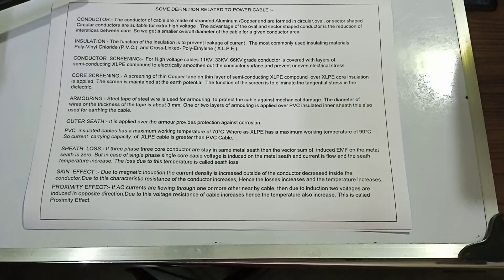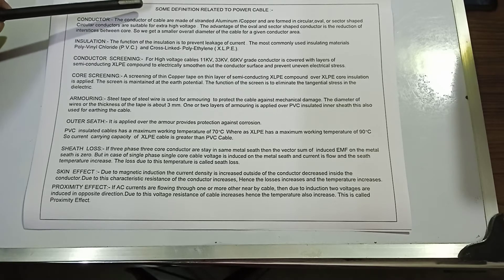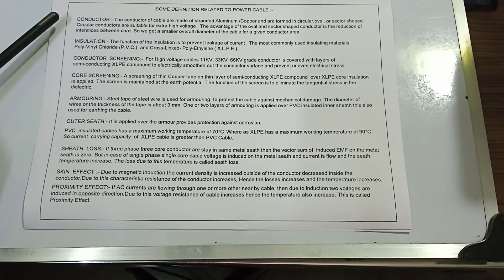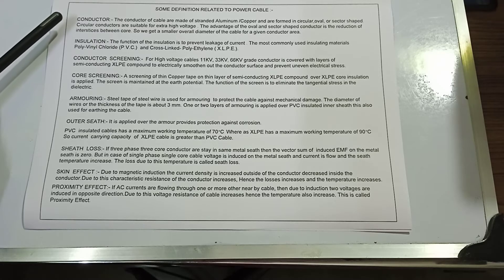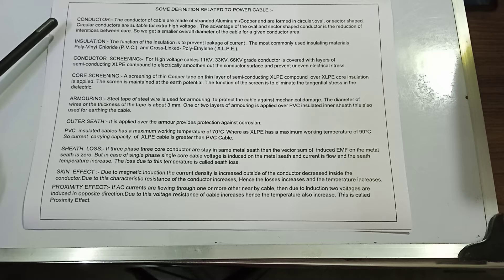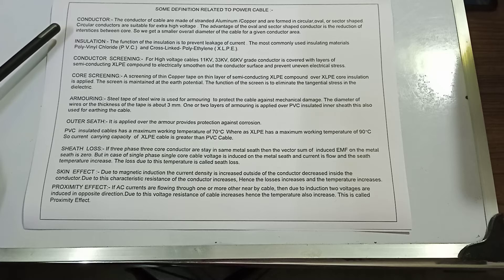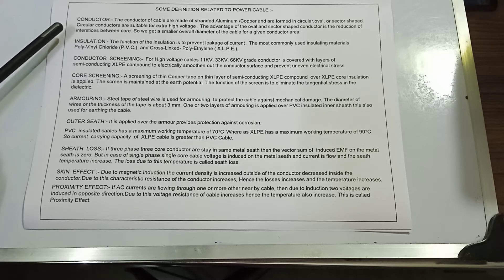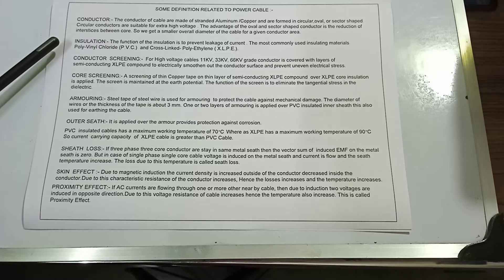Now I am going to discuss some definitions related to power cable. First: conductor. The conductors of a cable are made of stranded aluminium or copper and formed in circular, oval, or sector-shaped profiles. Circular conductors are suitable for extra high voltage. The advantage of oval and sector-shaped conductors is the reduction of interstices between cores.